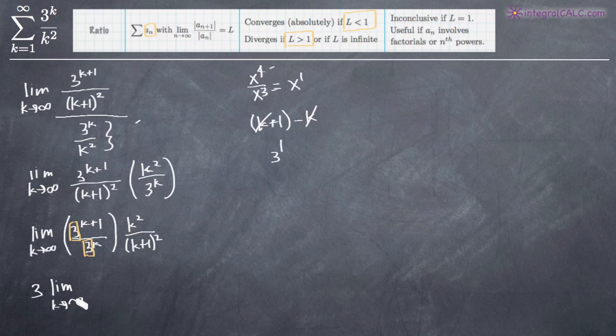So now we're just taking 3 times the limit as k goes to infinity of k squared over (k+1) squared. And what we want to do now, I'm going to go ahead and multiply out the denominator so that we can see what we've got a little bit more clearly.